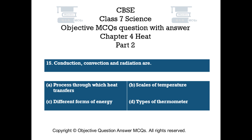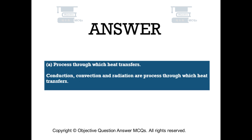Question number 15. Conduction, convection, and radiation are — Option A: processes through which heat transfers, Option B: scales of temperature, Option C: different forms of energy, Option D: types of thermometer. The right answer is Option A — Process through which heat transfers. Conduction, convection, and radiation are processes through which heat transfers.